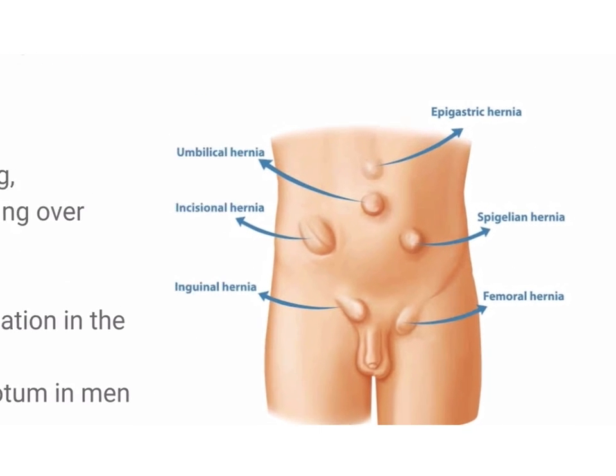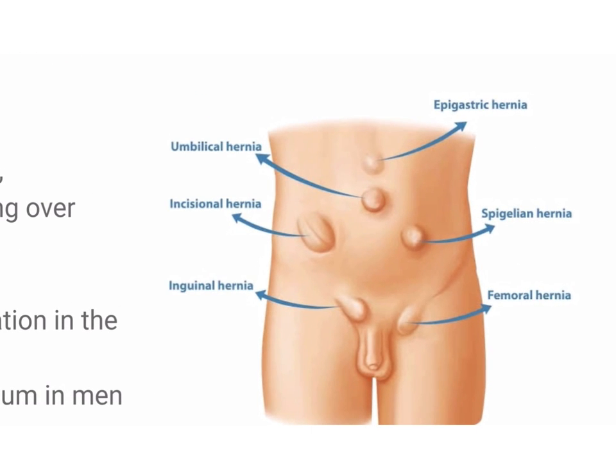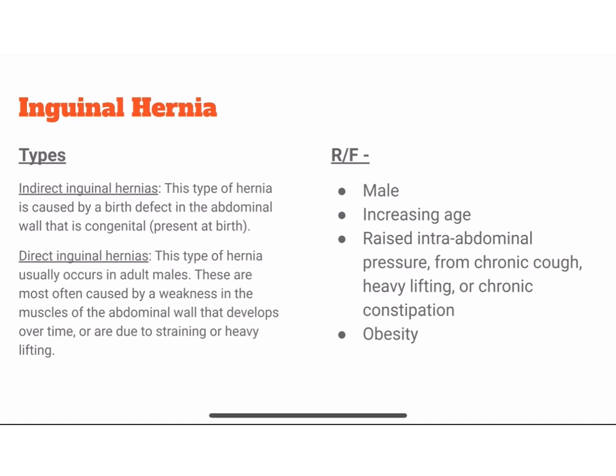There are various types of hernia. There are two types of inguinal hernia: indirect and direct. The indirect type is caused by a congenital birth defect in the abdominal wall. The direct type usually occurs in adult males and is most often caused by weakness in the abdominal wall muscles that develops over time, or due to straining or heavy lifting. Risk factors include being male, increasing age, raised intra-abdominal pressure from chronic cough, heavy lifting, chronic constipation, and obesity.